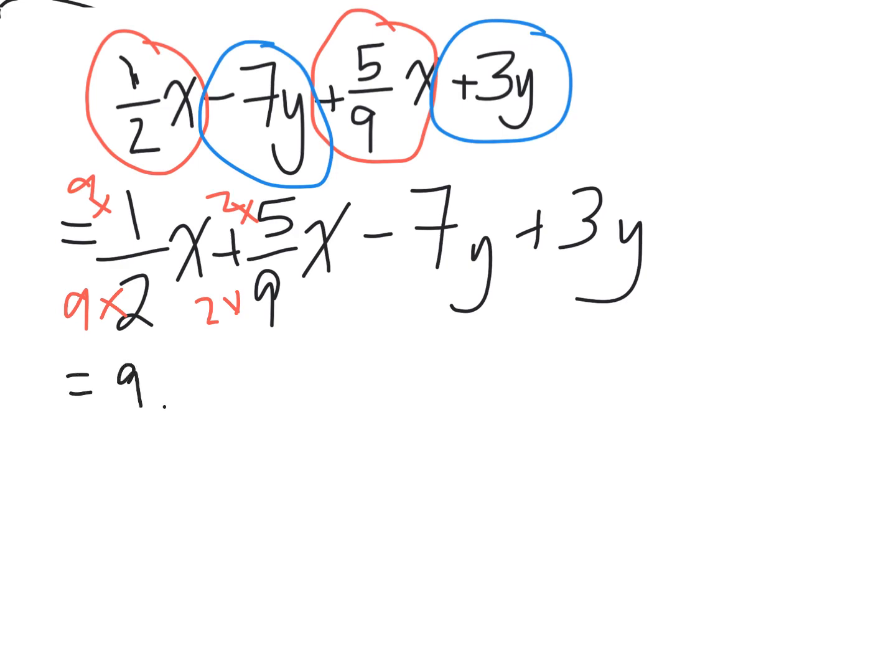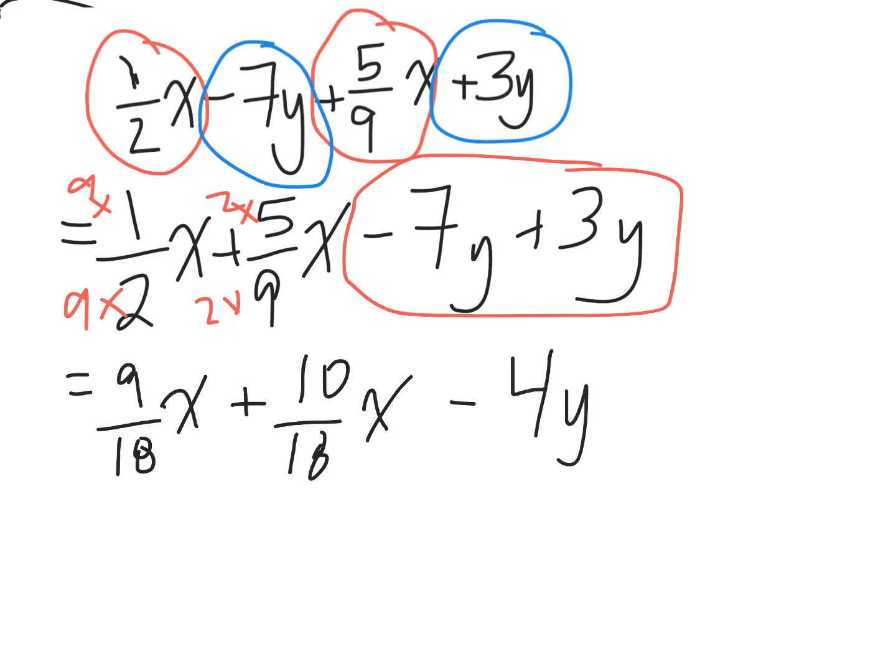So that gets me 9/18 x plus 10/18 x, and then I can probably look at these like terms and do something about them. Negative 7 plus 3 gets me to a negative 4y, that's easy to deal with while I've got a second.